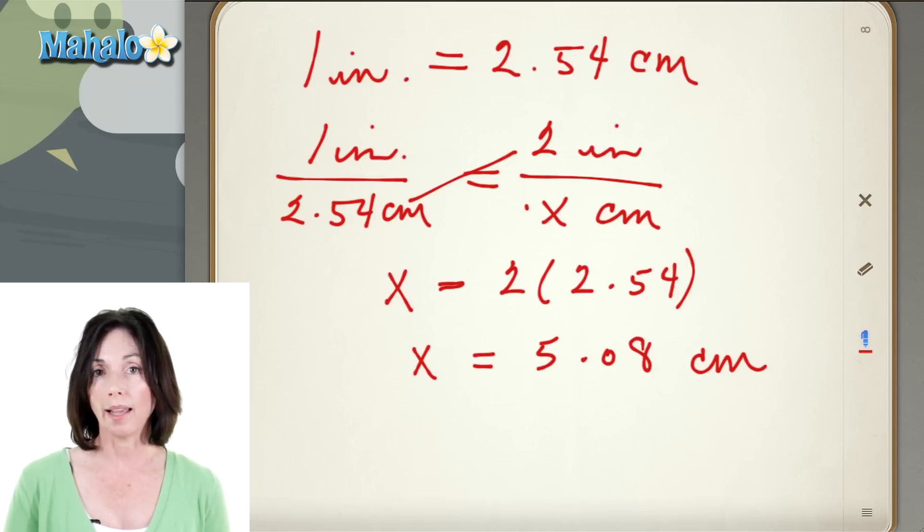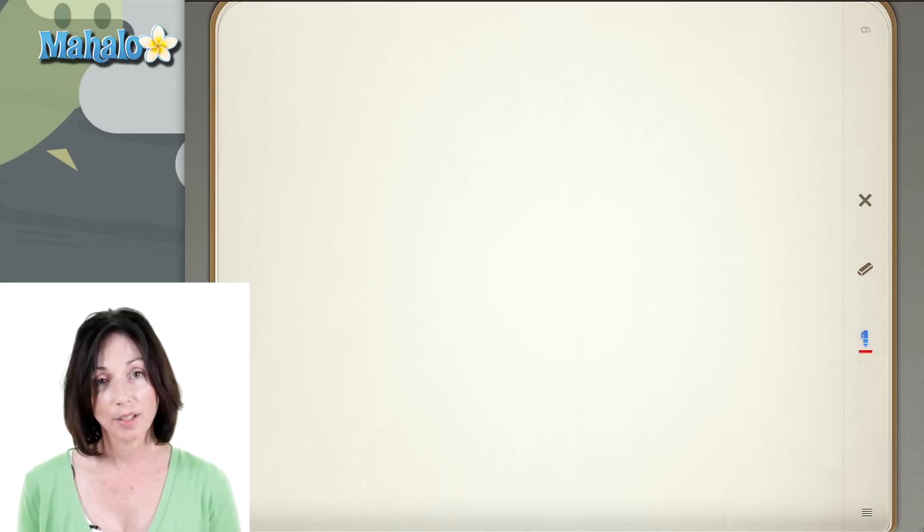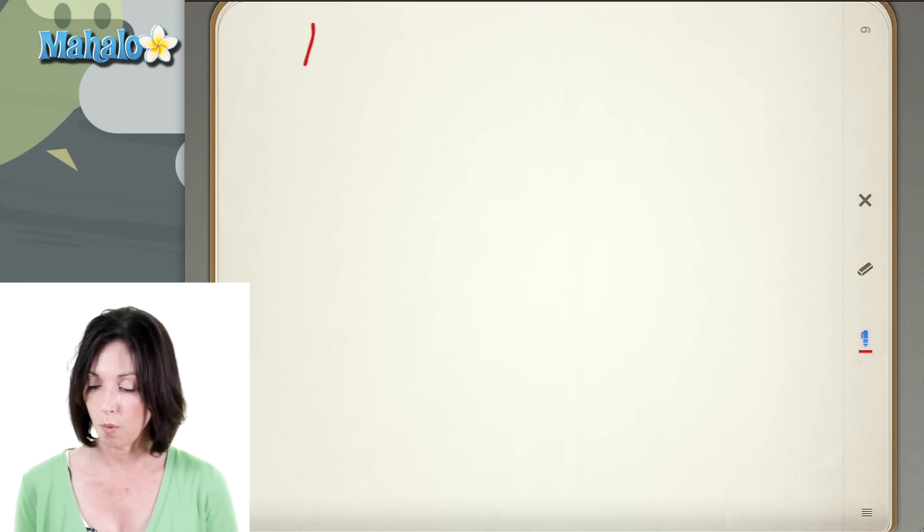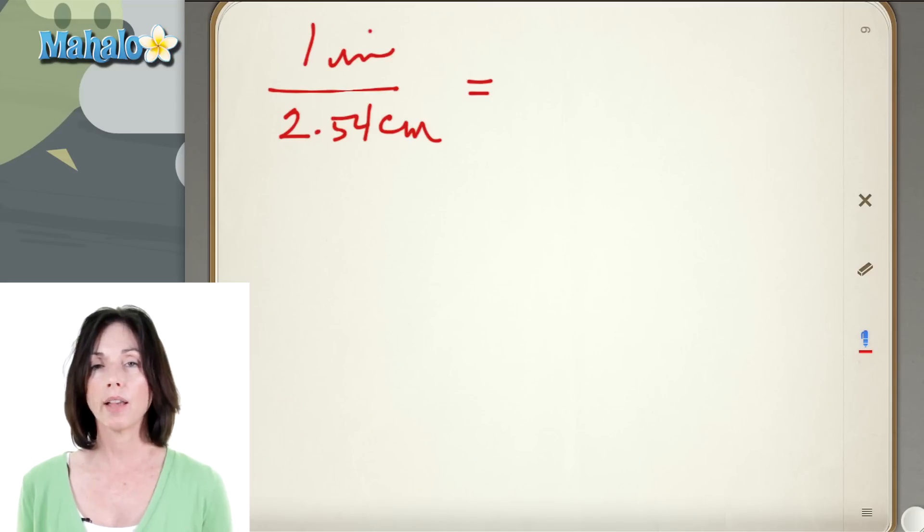Now you can also go the other way. If you have centimeters you can find out inches. So let's look at that. So again we have our conversion factor. We have 1 inch for every 2.54 centimeters. Now let's say I have 7.62 centimeters and I want to convert it to inches.